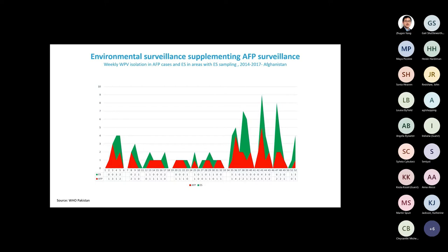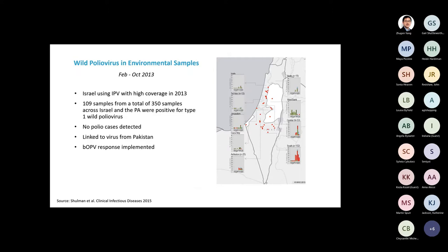Environmental surveillance has been critical in surveillance for the virus and supporting eradication campaigns. You can see how well positive results in environmental samples correlate with those from paralytic cases — this is an example from Pakistan. It has also allowed us to track how long the virus remains in the population after vaccine campaigns, and actually to find wild poliovirus circulating in areas where there is no paralytic disease, because in areas with relatively good vaccination rates the virus can circulate silently.